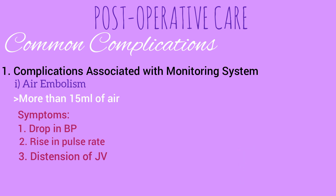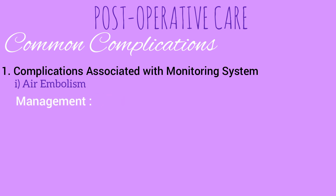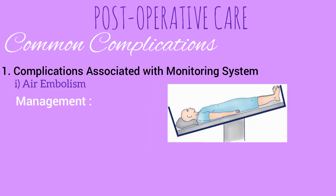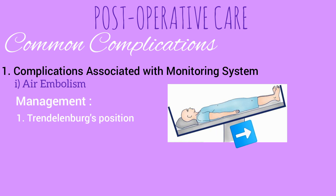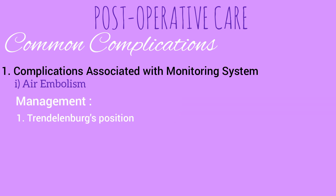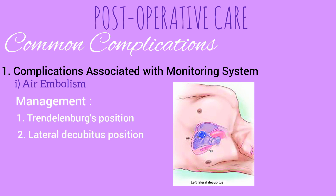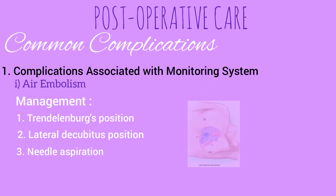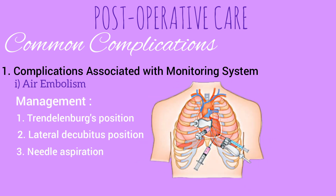If you are suspecting air embolism, immediate management will be to place the patient in a head-down or Trendelenburg position. This will encourage the air to float into the veins of the lower part of the body. Also place the patient on the left side — this will prevent the air from entering into the pulmonary arteries. In extreme cases, air may be aspirated from the heart through a needle introduced below the left costal margin.